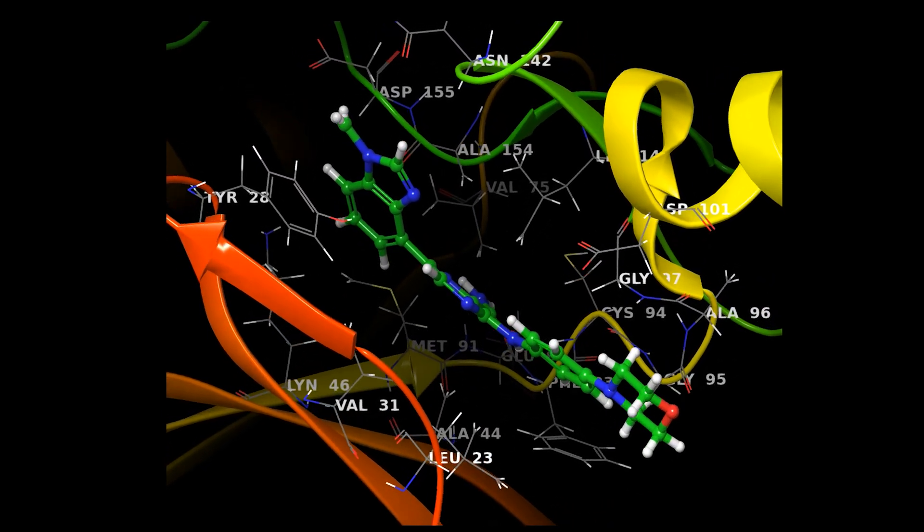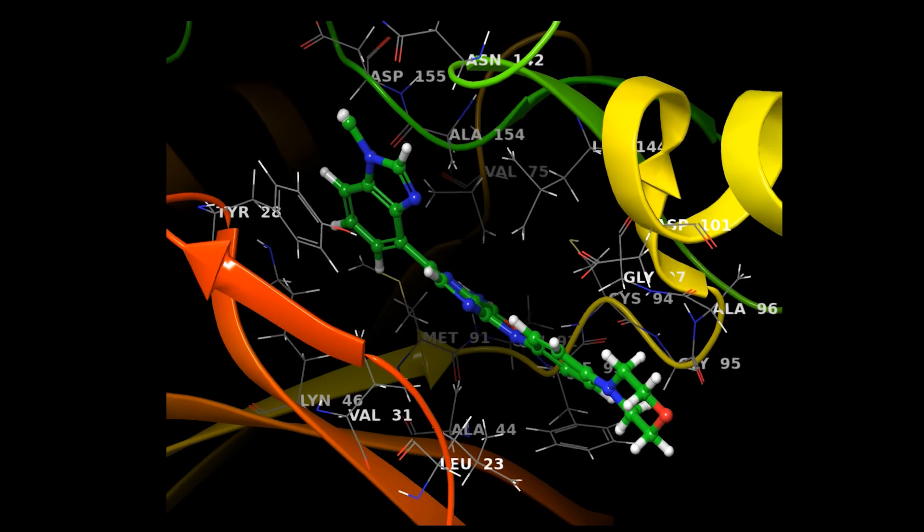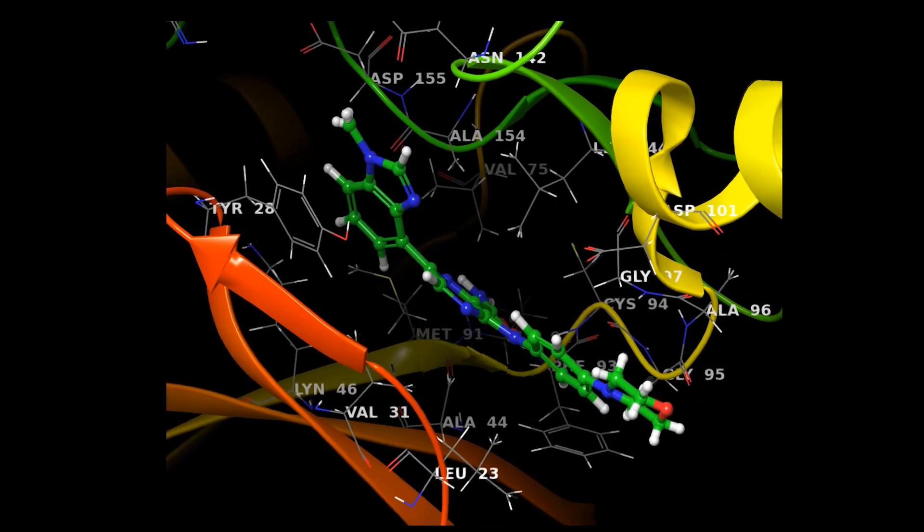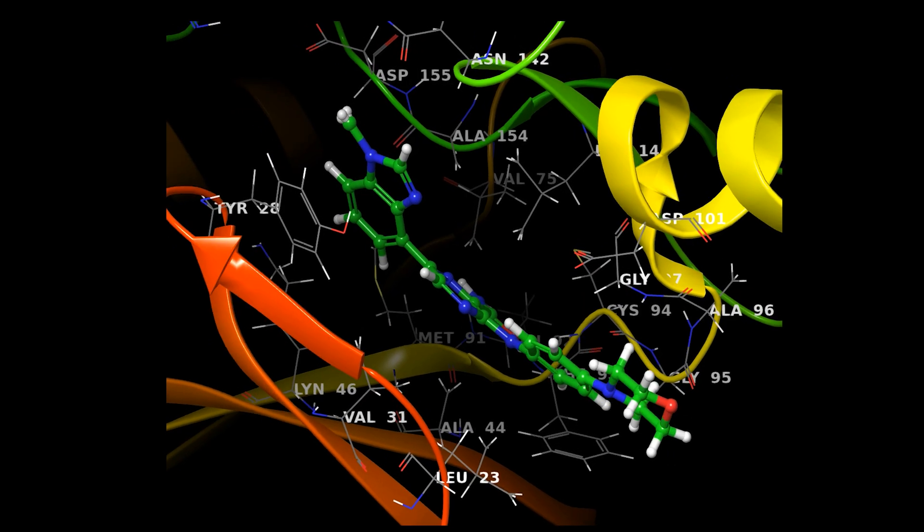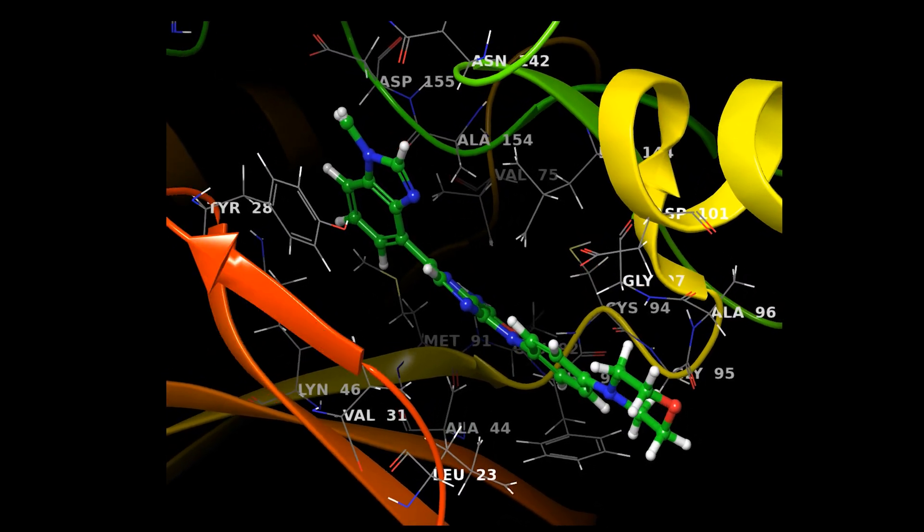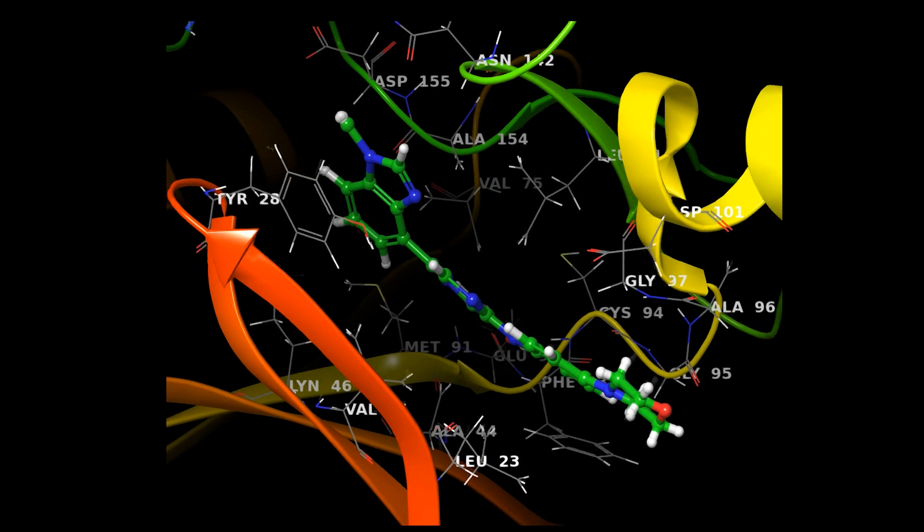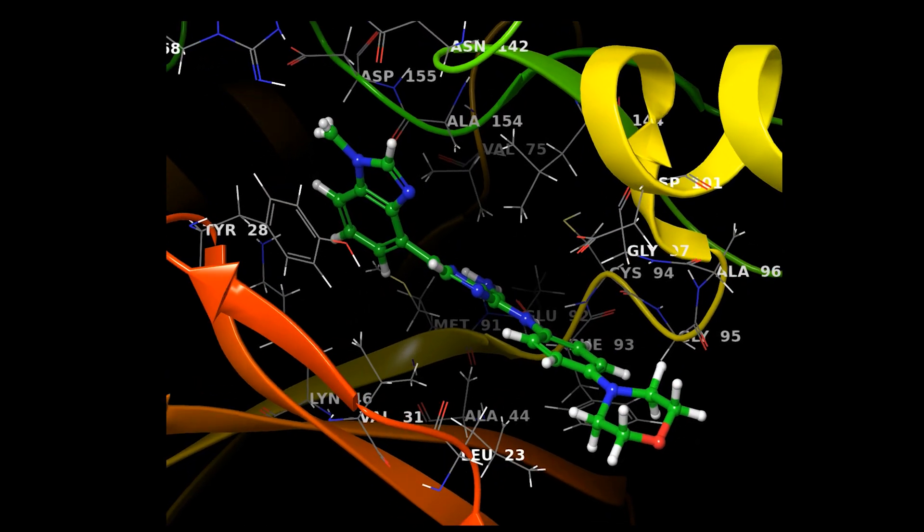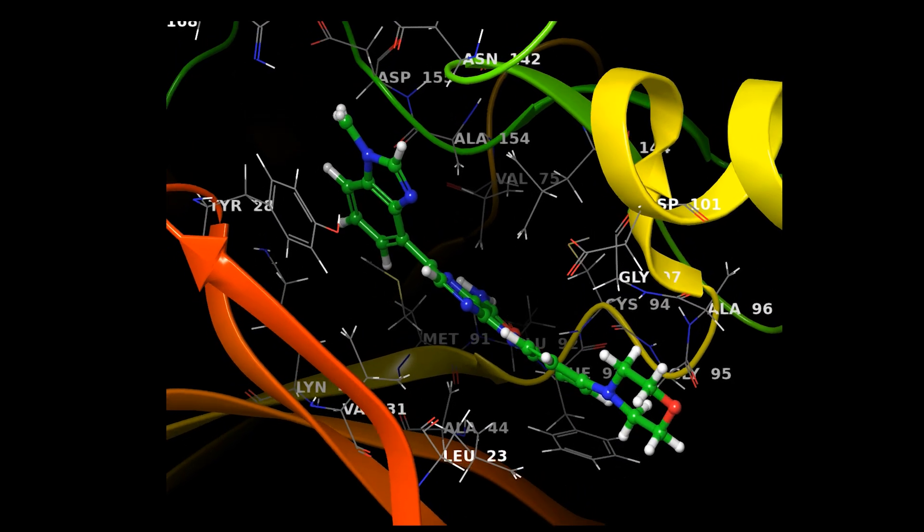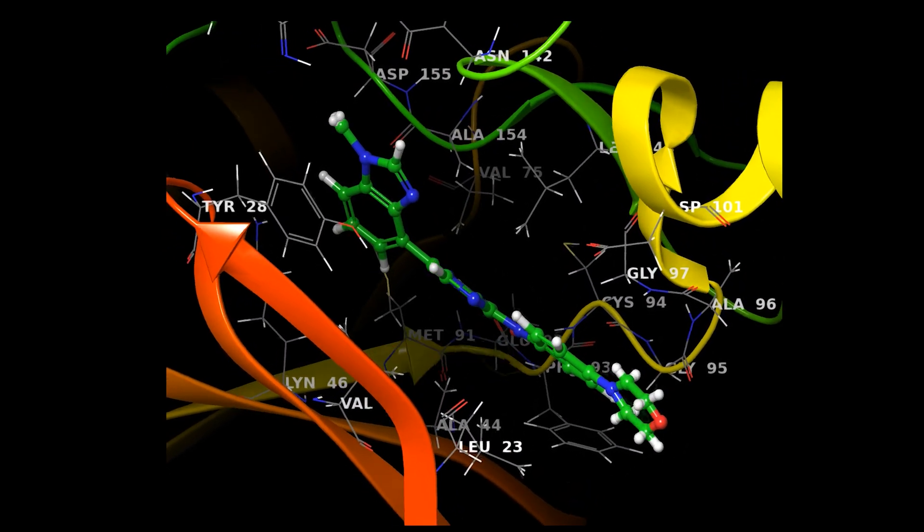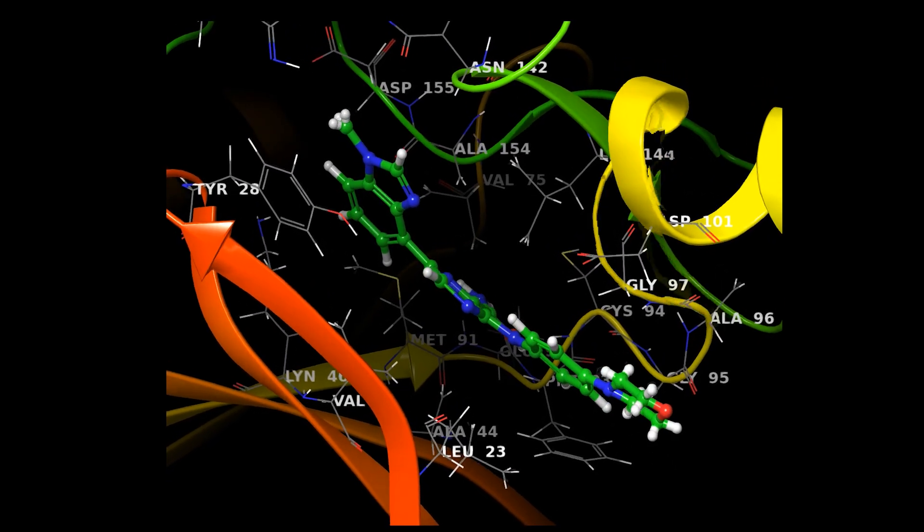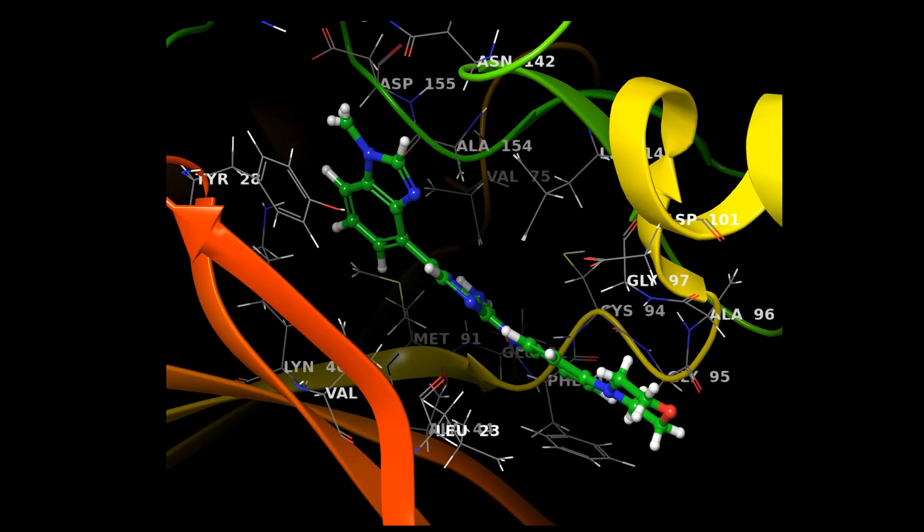Alright, so back to our molecular movie. We have HPK1, the protein, and this inhibitor, our potential cancer-fighting key, together in a simulation. We set up this simulation using an actual 3D snapshot scientists had captured of HPK1 with an inhibitor bound, protein data bank entry 9H8D for the curious. That snapshot was like a freeze frame of our two dancers mid-pose, so we said, alright, let's see them move. So what did we see in this molecular dance?